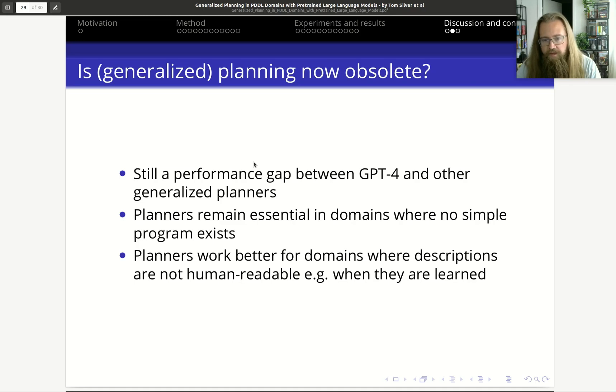The main question behind this paper is: is generalized planning now obsolete when we have these large language models? Do we need generalized planners? The main conclusion here is that no, it is not obsolete, because as you've seen in the results, you cannot guarantee that these plans, these generalized program plans, will work in all cases. In most of the domains they don't work in all cases. But in generalized planning we want to guarantee that the planner produces a valid plan or an optimal plan in all cases.